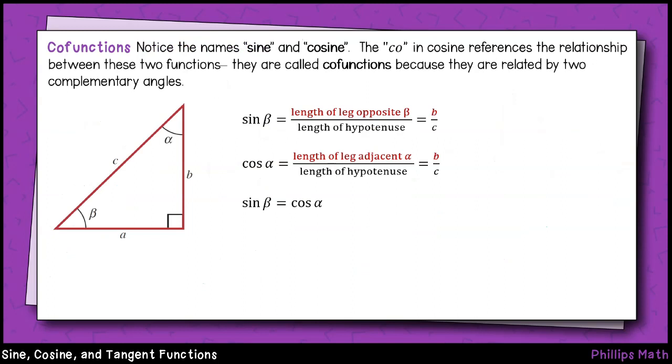Last, I want to make a quick note about co-functions. There are several additional trigonometric functions beyond sine, cosine, and tangent that we will not get to study this semester. But I do want to point out that sine and cosine, as you may have already noticed, are closely related by their co-functionality. You probably already noticed that sine of one acute angle in a right triangle is equal to the other angle's cosine and vice versa.